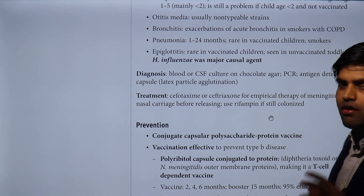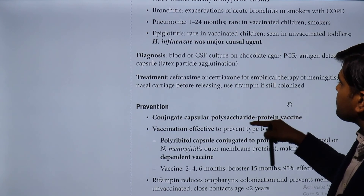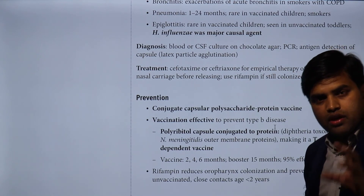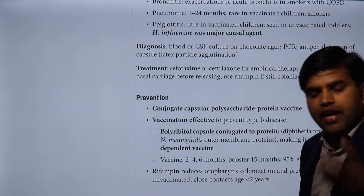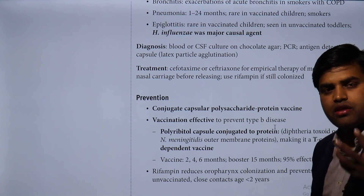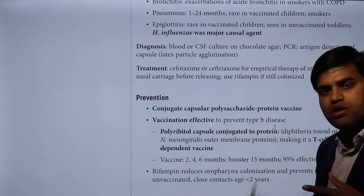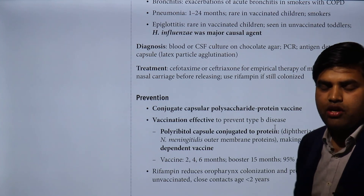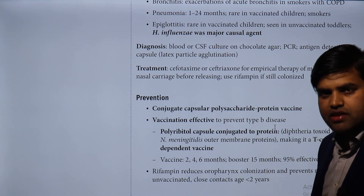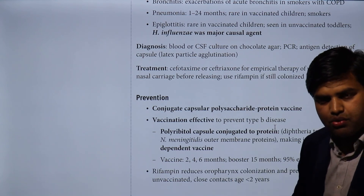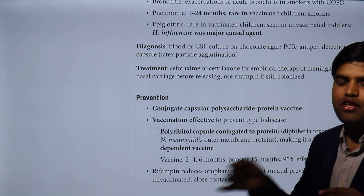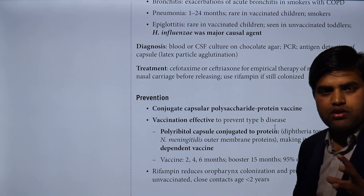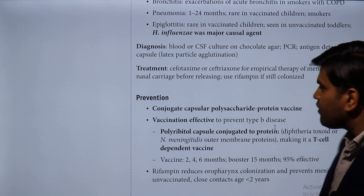For diagnosis, blood or CSF cultures on chocolate agar are used — chocolate agar is preferred because blood agar has only X factor, and other media have neither factor. Once grown on chocolate agar, X and V factor discs can be applied to confirm identity. The satellitism mechanism using Staph aureus on blood agar can also be used. When asked where to culture this organism, the answer is chocolate agar because it contains both X and V factors.